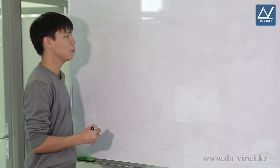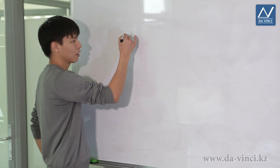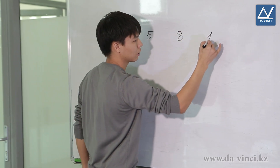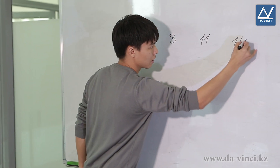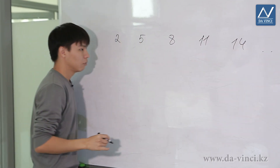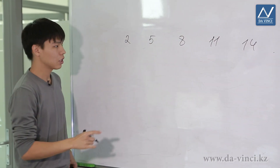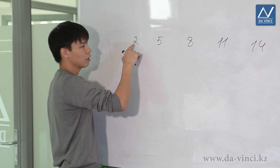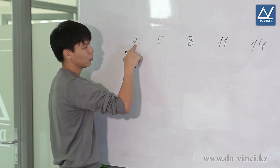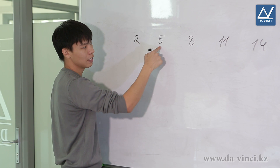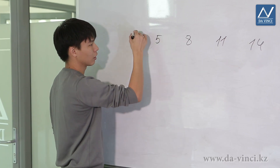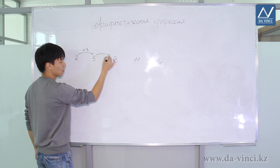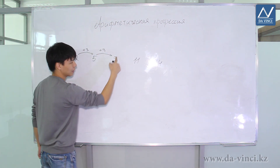Let's consider the following numerical sequence: 2, 5, 8, 11, 14, and so on. You see that there is some peculiarity in this numerical sequence. Namely, each subsequent number is obtained from the previous one by adding 3. That is, 2 became 5 by adding 3, 5 became 8 by adding 3, and so on.